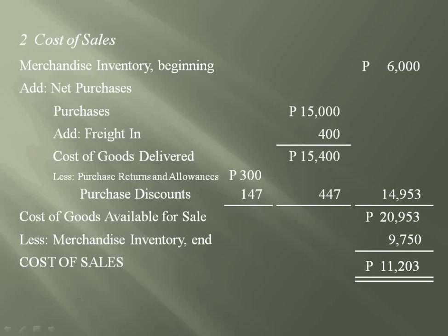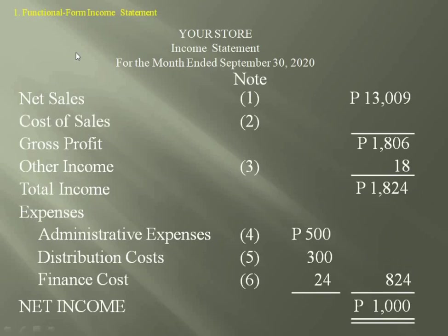Now that you have a proper understanding of each of these terms in note 2, knowing by heart the computation of cost of goods sold or cost of sales will be much easier. When you prepare the income statement of your store, cost of sales is deducted from net sales to arrive at gross profit. If there is other income, it is added to gross profit to get total income. Expenses — composed of administrative expenses, distribution cost, finance cost, and other expenses — are then deducted from total income to arrive at net income or net loss.